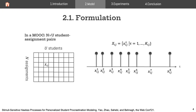Starting with the formulation, suppose in the MOOC we have N assignments and U students. We formulate the problem of student procrastination modeling as the problem of modeling N times U student-assignment pairs, where each pair is characterized by all activities of the corresponding student conducted toward the corresponding assignment. For example, in student-assignment pair IJ, there are eight activities, each characterized by its timestamp that randomly falls on the continuous timeline.